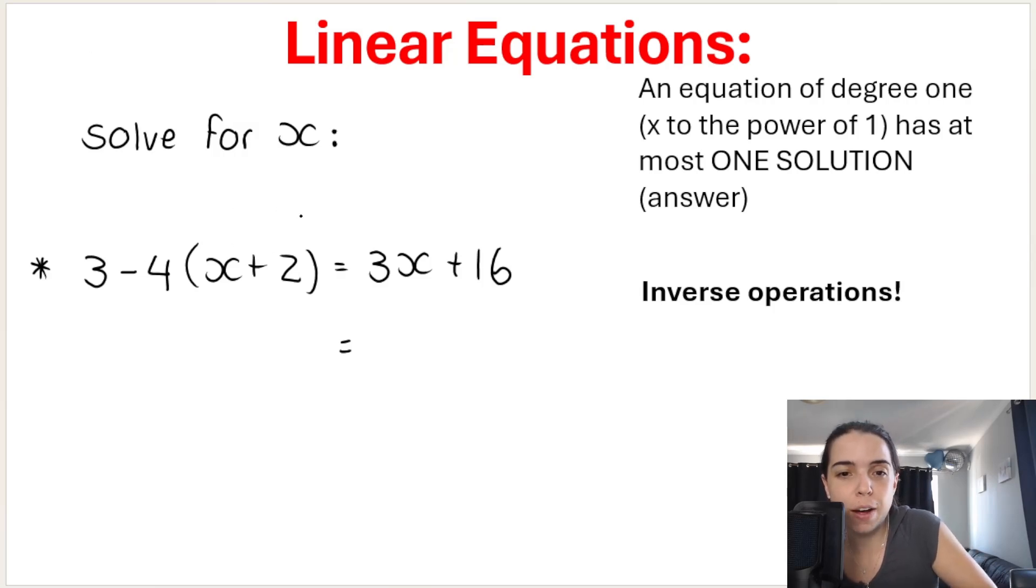When you are simplifying the left-hand side of this equation before we carry on solving, we need to distribute. It's the distributive property or the distributive law. We need to multiply the term that is directly outside the bracket, so negative four, that needs to be multiplied into the brackets. Where a lot of students go wrong is they think that they must first subtract these. That's wrong.